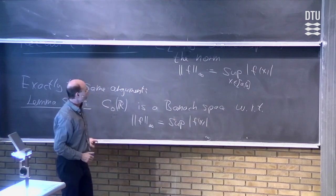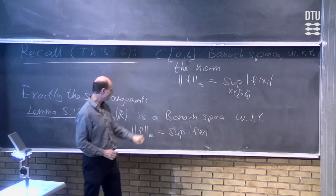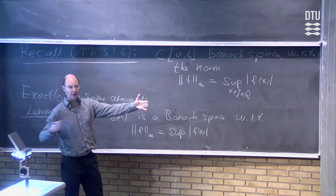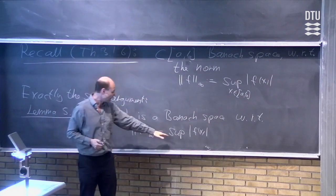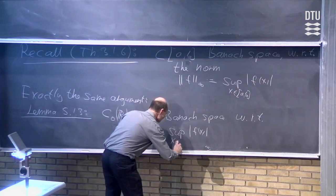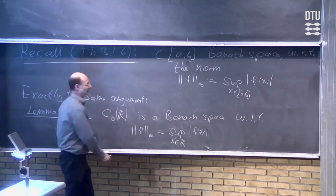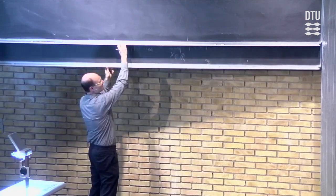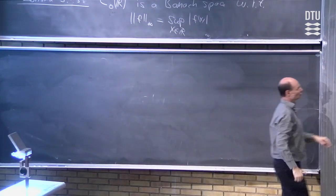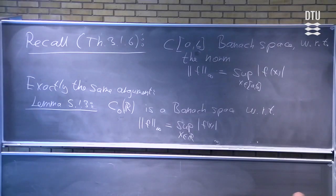The only difference is that here we were looking at functions on the interval a to b. Now when we look at C₀(ℝ), we are dealing with functions defined on the entire real axis, meaning the supremum needs to be taken over x in ℝ. We would like to relate that to the space of continuous functions with compact support, which is what is done in the next lemma.